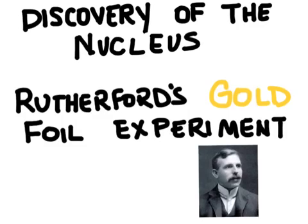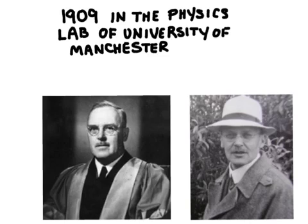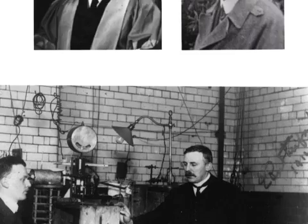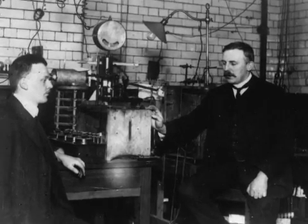The Gold Foil Experiment was an experiment set up to prove the structure of the atom. Often it's called Rutherford's Gold Foil Experiment, although it was Heinz Geiger and Ernest Marsden that actually performed this experiment under the supervision of Rutherford. Rutherford was basically their boss. So it was in 1909 that this team of scientists set to change our perception of the atom.